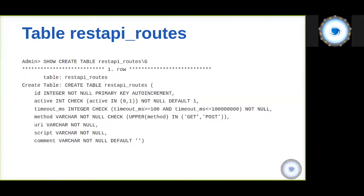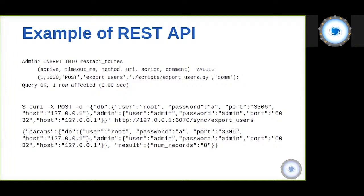How does the REST API exactly work? Almost everything in ProxySQL is configured in a table. There is a table called rest-api-routes where users can configure whether a specific endpoint is enabled or disabled, set a timeout so that a script is automatically terminated if it runs too long, specify the HTTP method (GET or POST), the URL, the script to execute, and any optional comments.